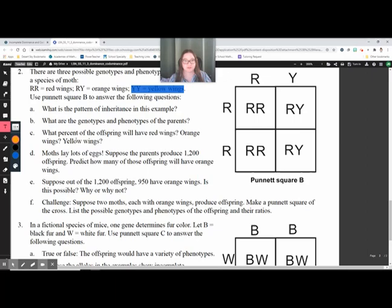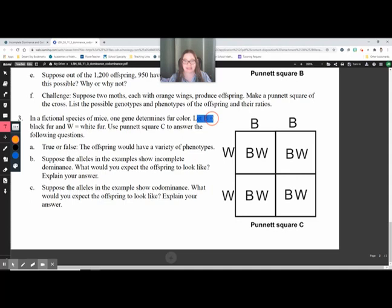So they're going to have to share. In this case, they share by blending. So which type of inheritance or which type of dominance is the one where they share? And then just go through the rest of the questions and answering them as you go. Feel free to ask me if you don't understand any of these. Part three, same idea. We're using a capital B, a capital W, and we're talking about mice. One gene determines for color. They would have a variety of phenotypes. Suppose the allele. And it wants you to suppose if there was incomplete dominance, what would happen? And if there was co-dominance, what would happen? So you're going to need to know the definitions of each of these words.